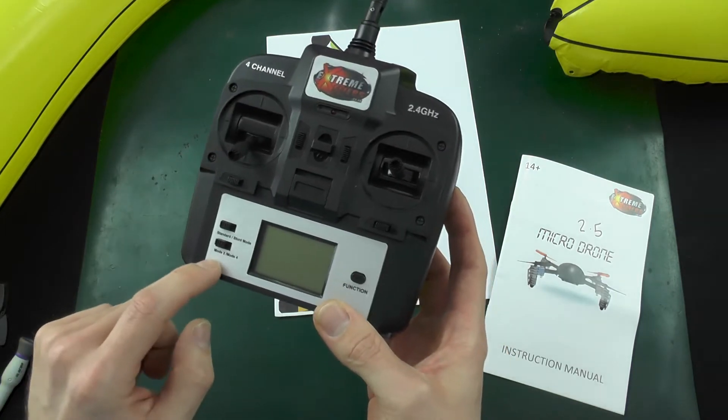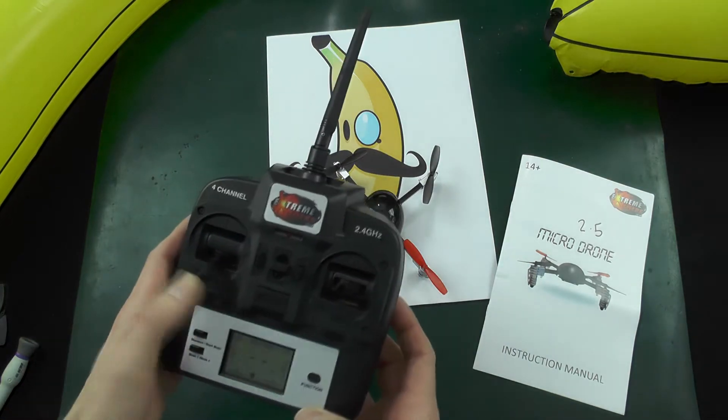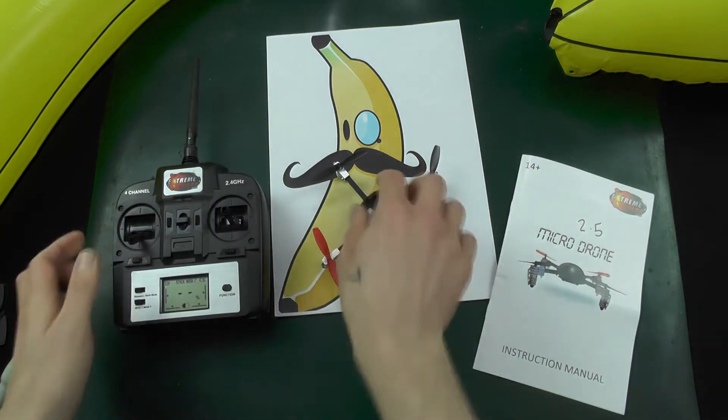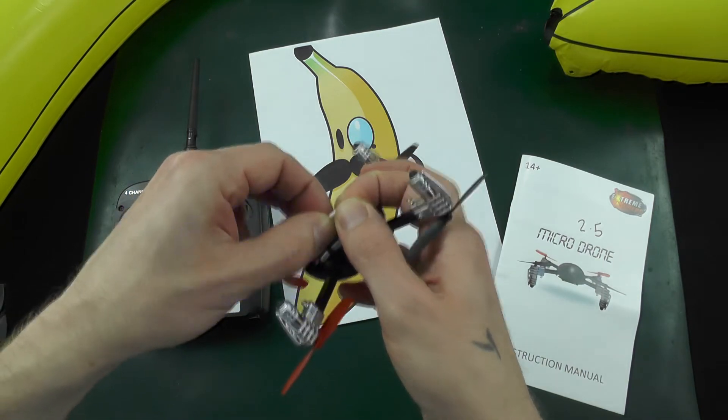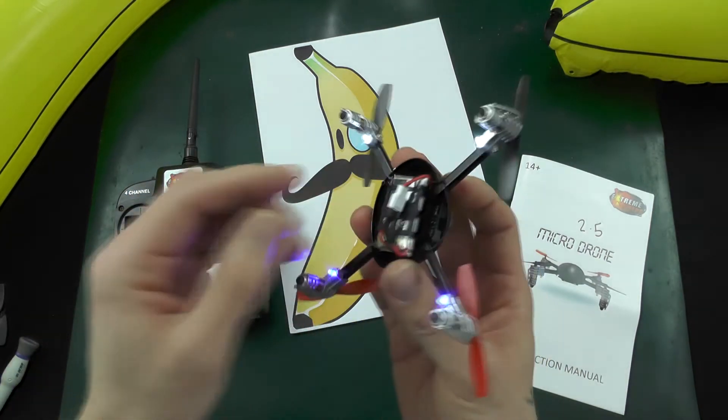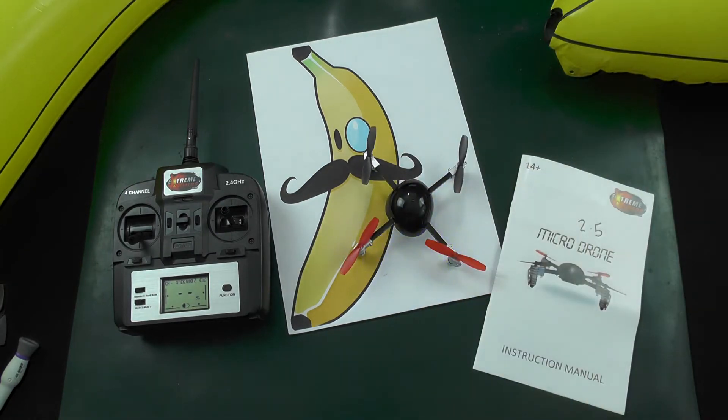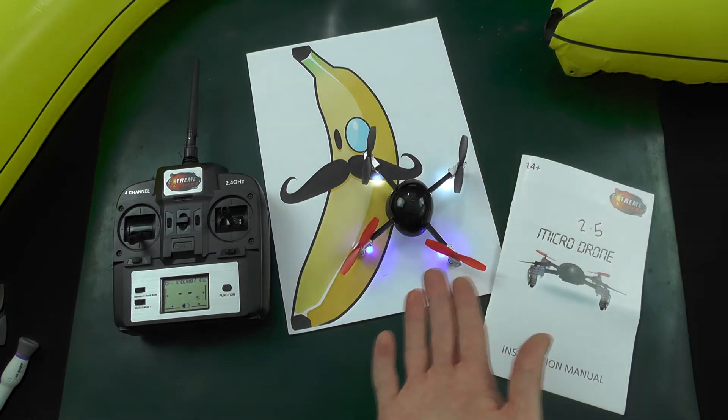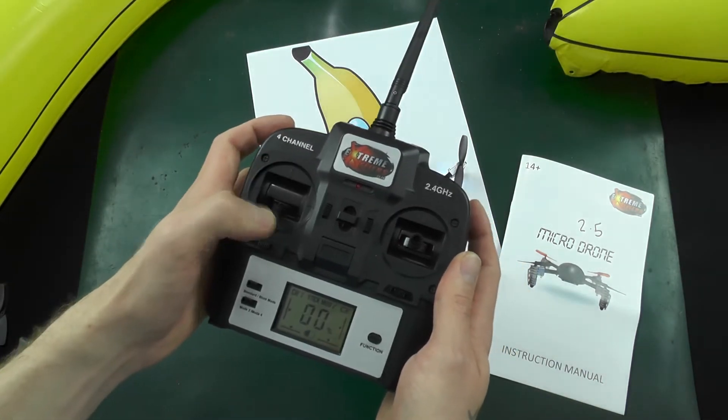We'll switch the controller on, hopefully the batteries will not crap out on us, and plug this in again. Flashing rapidly until you put it on a flat surface, detects that it's steady, up to the top, back down, and that's bound. So now ready to fly.